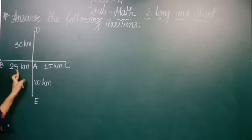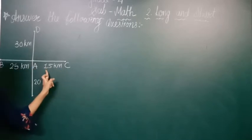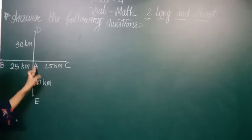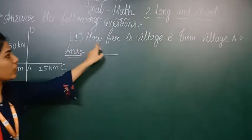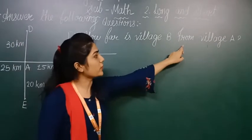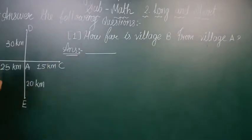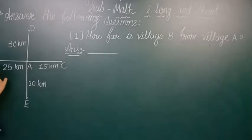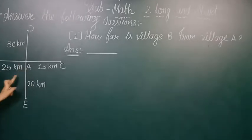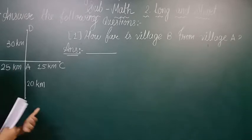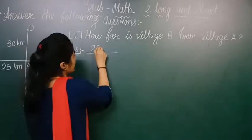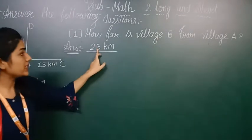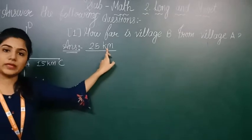Number one question: how far is village B from village A? A to B is 25 km, so the answer is already given — 25 km. That means village B is 25 km far from village A.